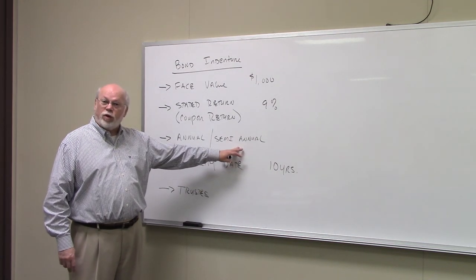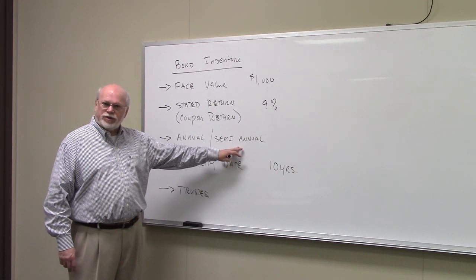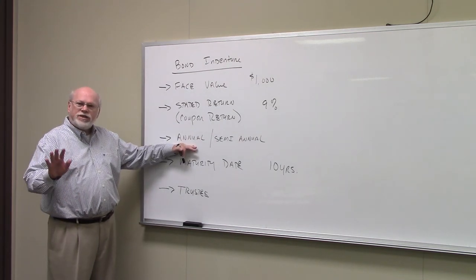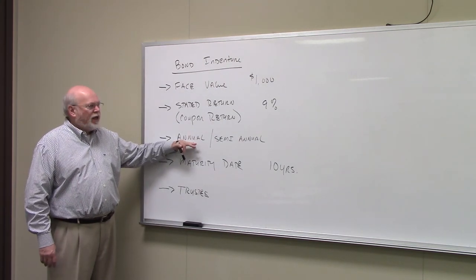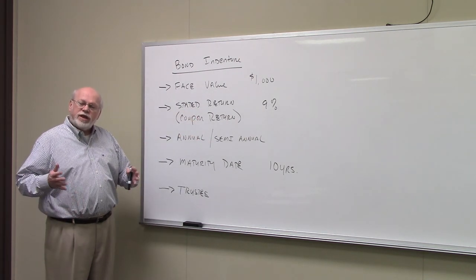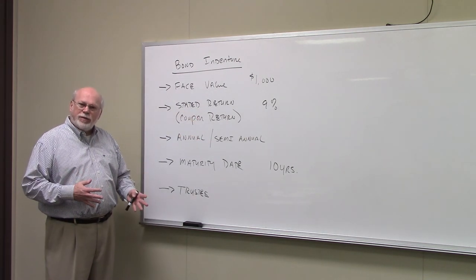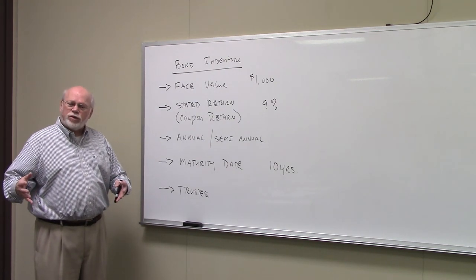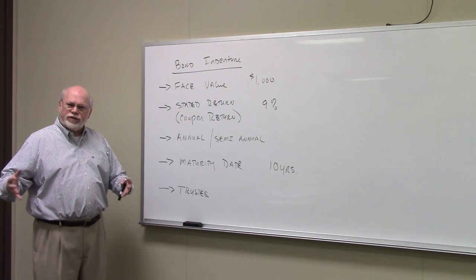If this is an American bond, you're not going to get one payment of $90. You'll get two payments of $45 every year, so every six months you'll get $45 in interest. If this was a European bond or a bond that simply paid interest annually, you would get $90 a year. So the stated return times the face value tells you the total interest in dollars that you'll get over the course of the year.